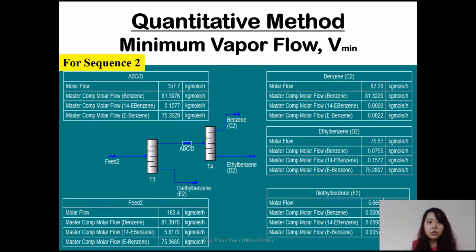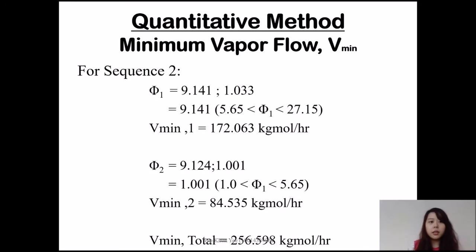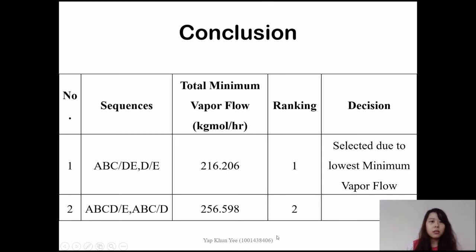The V minimum of sequence 1 is 216.206 kg mole per hour. Here is the summary. For sequence 2, the total V minimum is 256.598 kg mole per hour. From the total minimum vapor flow, sequence 1 has been selected due to the lowest minimum vapor flow. Based on qualitative and quantitative methods, sequence 1 is the most suitable for this separation process. Thank you.